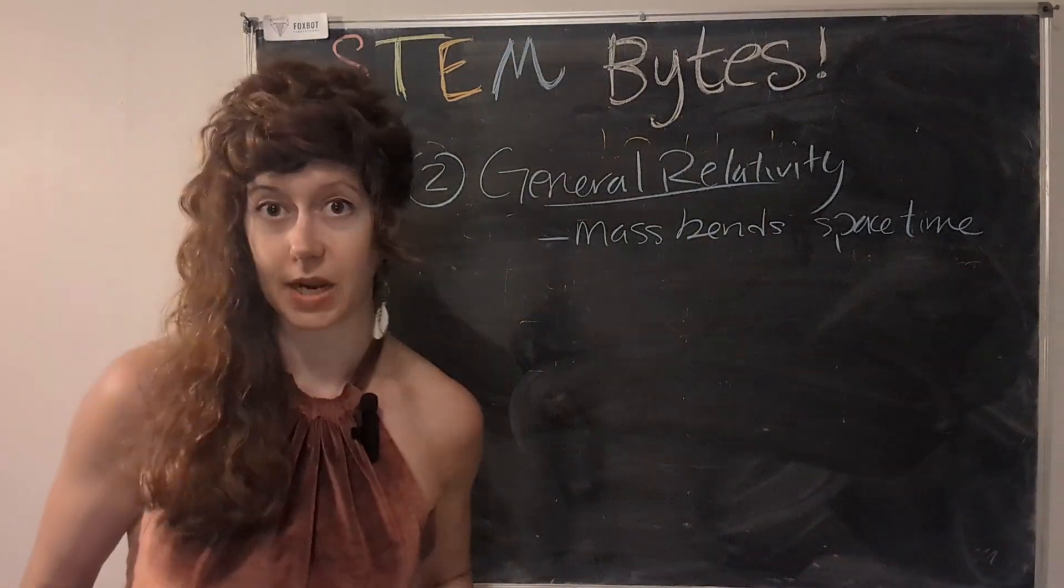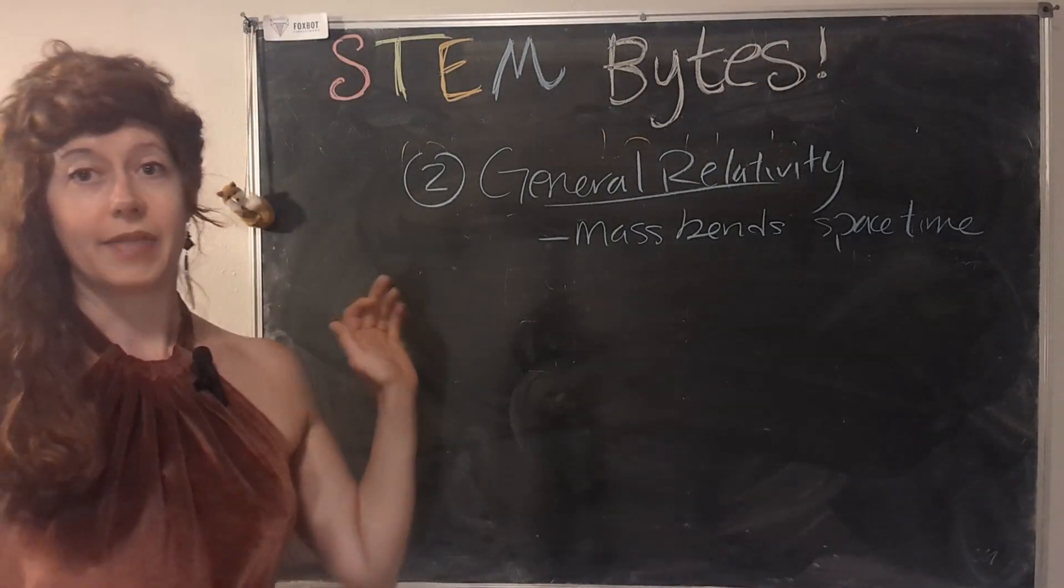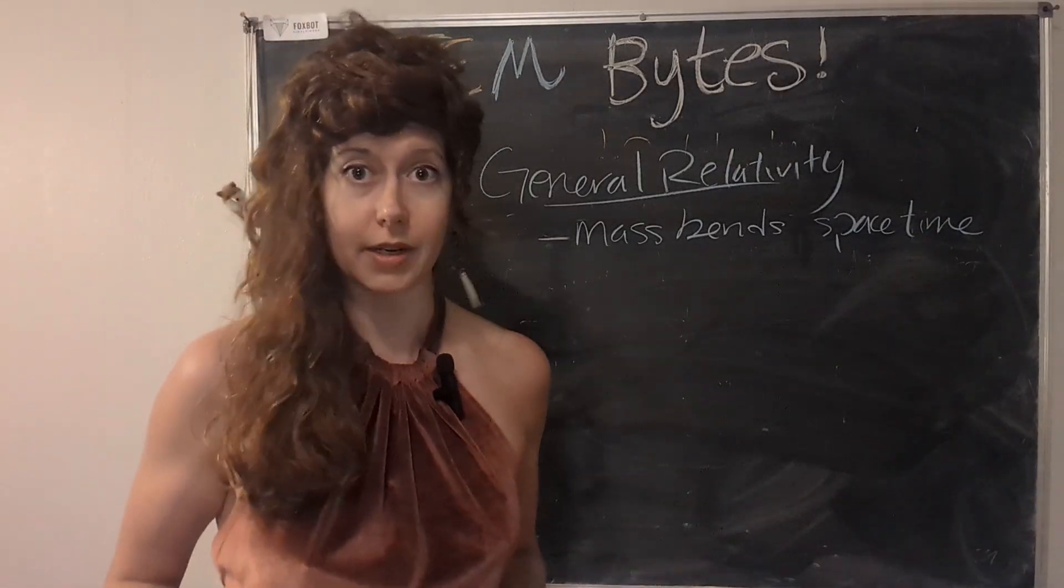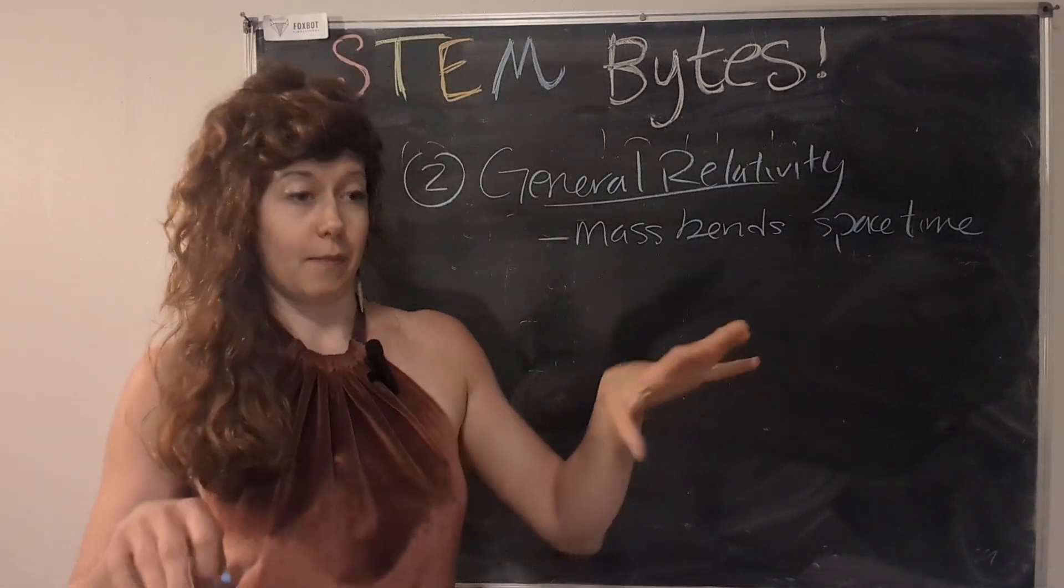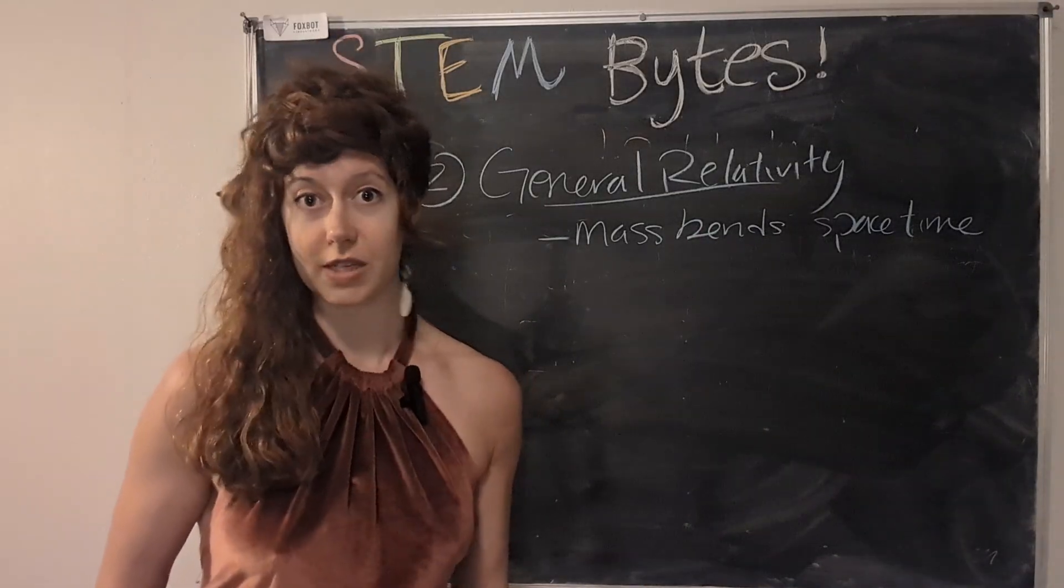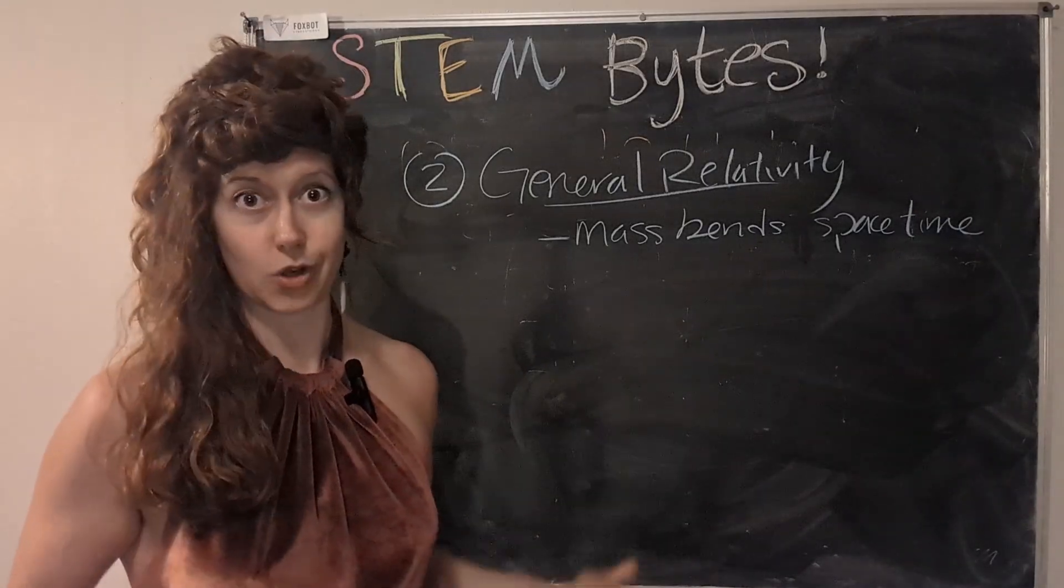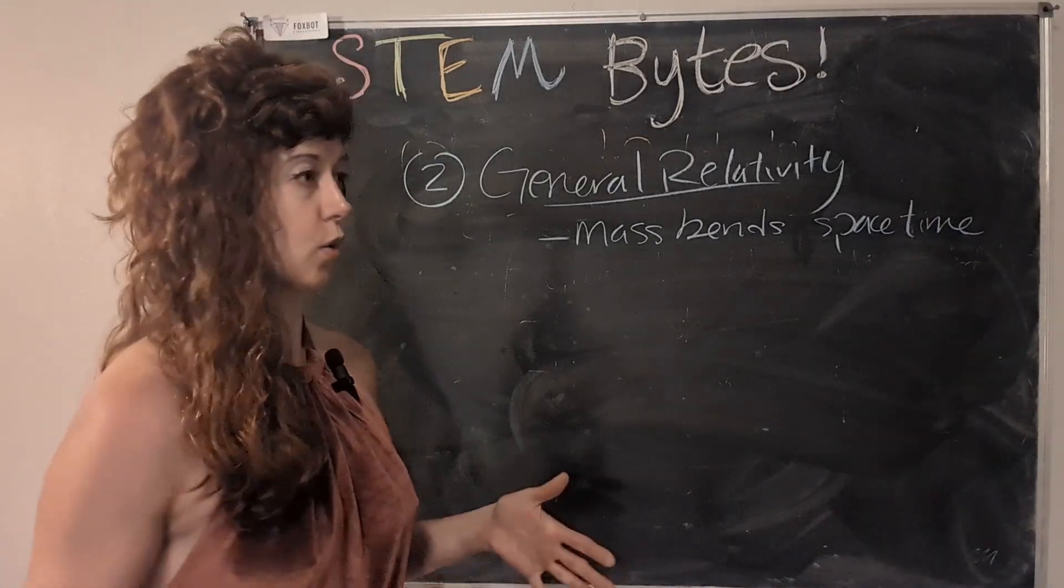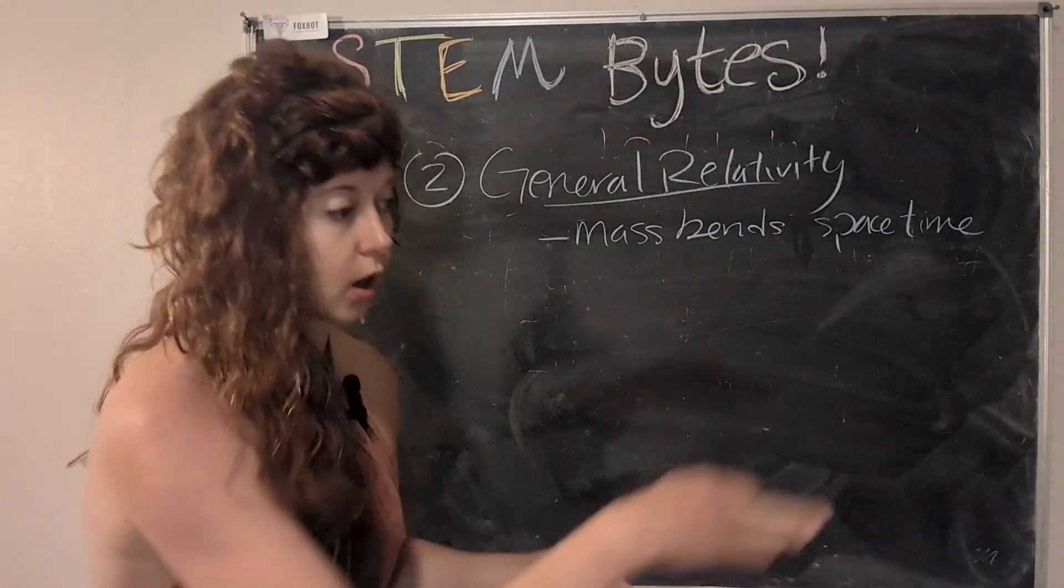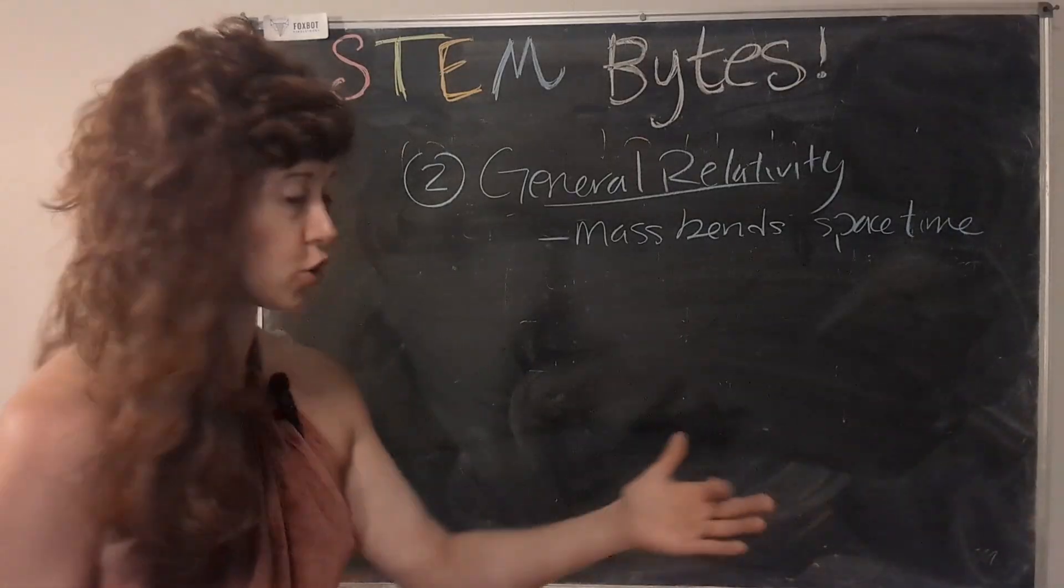So mass bends space-time. And that's kind of what gravity is doing, which is super wild. And then because of this curvature of space-time, space-time is not flat. There's all kinds of objects in space making bumps or some black holes making some really intense curves in space-time. And so objects can't travel in a straight line through space-time because it's curved. It's like trying to walk across a bowl. You can't float in the air. And so you have to walk on the curve of the bowl.